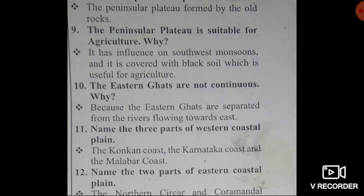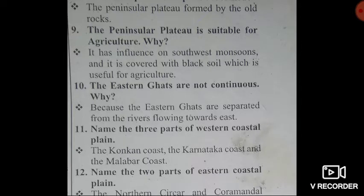Ninth question: The Peninsular Plateau is suitable for agriculture. Why? Because it has influence from the southwest monsoons and is covered with black soil, which is useful for agriculture. Tenth question: The Eastern Ghats are not continuous. Why? Because the Eastern Ghats are separated by rivers flowing towards the east.